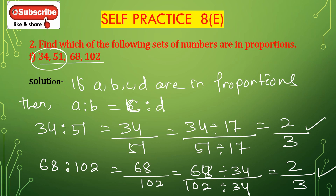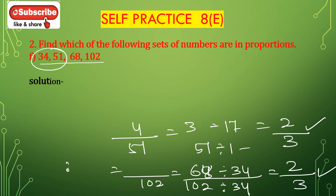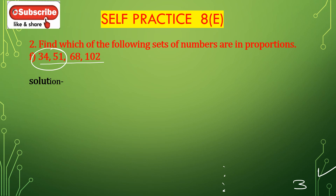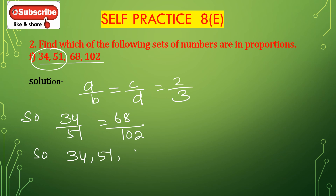Both ratios simplify to 2 divided by 3 and 2 divided by 3, both are equal. So A is to B equals C is to D, which equals 2 by 3. Therefore 34 divided by 51 equals 68 divided by 102. So these numbers 34, 51, 68, and 102 are in proportion.